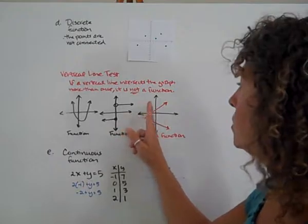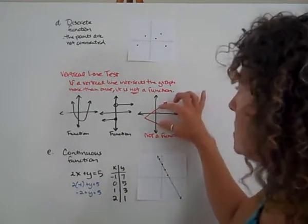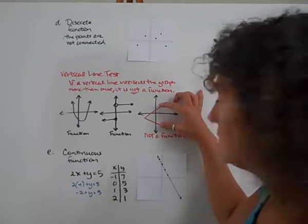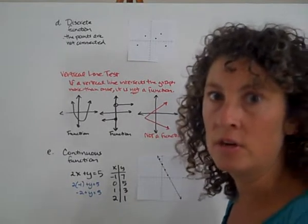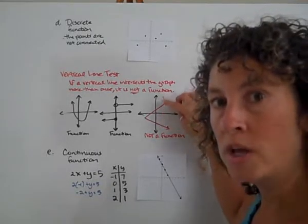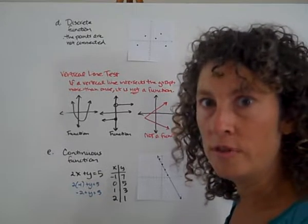This graph, however, if I run a vertical line across it, you'll notice that it would hit this graph in two points at one place, and so this is not a function. Again, if we think about our phone, if there's any point where one input would have two possible outputs, then it's not a function.